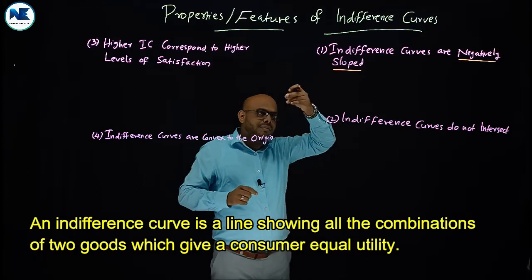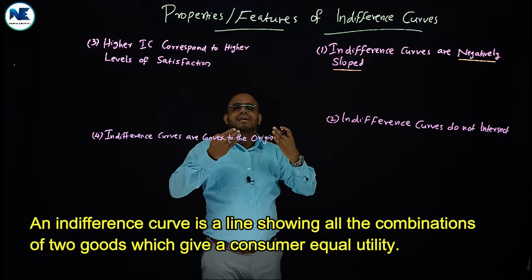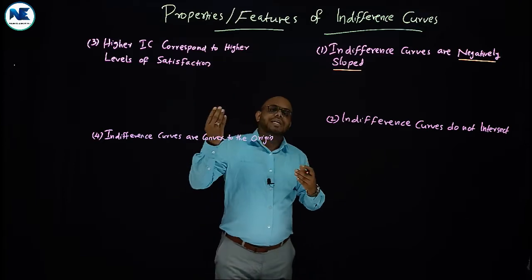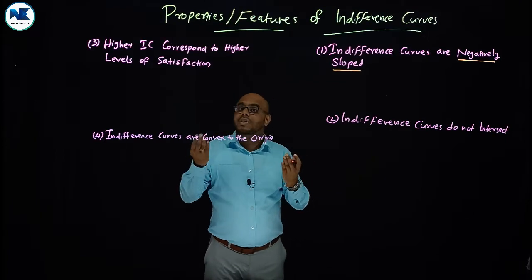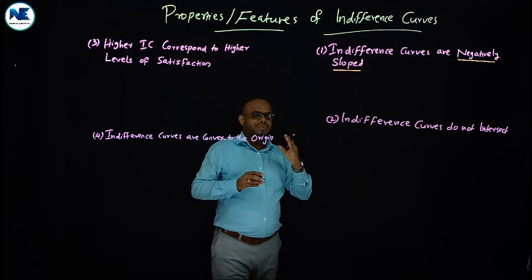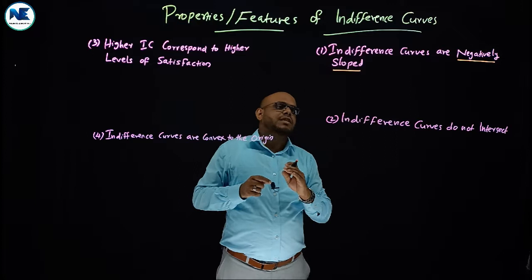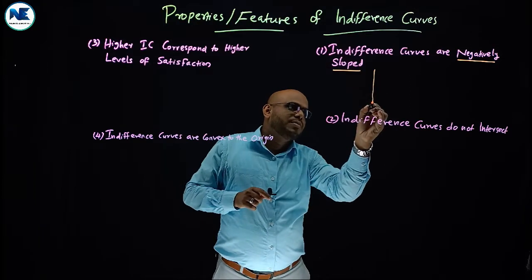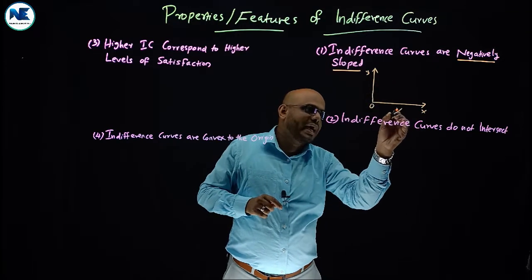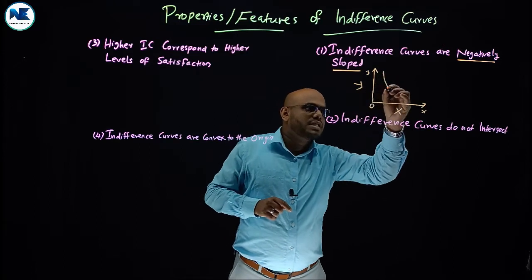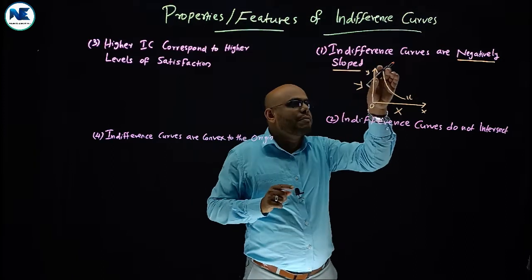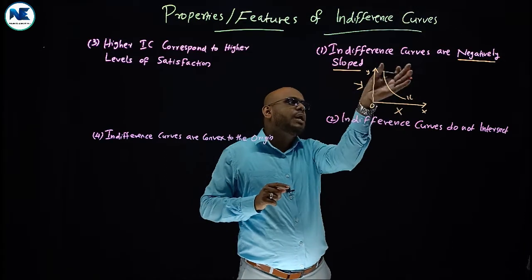The points on an indifference curve represent combinations to which a consumer is indifferent — meaning he gets the same level of utility or satisfaction from each combination. We can draw a figure with the X-axis showing Good X and the Y-axis showing Good Y. This is the indifference curve, sloping negatively from left to right.